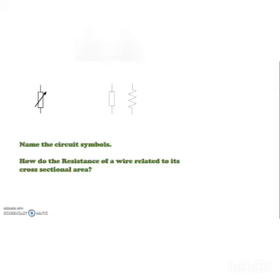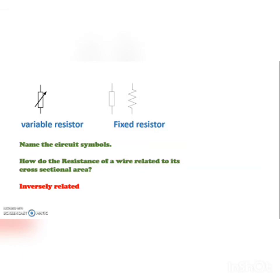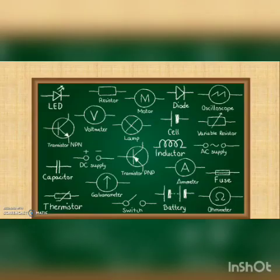Name the circuit symbols, and how is the resistance of Y related to its cross-sectional area? That symbol is a variable resistor, that is a fixed resistor, and the relation is inversely related.